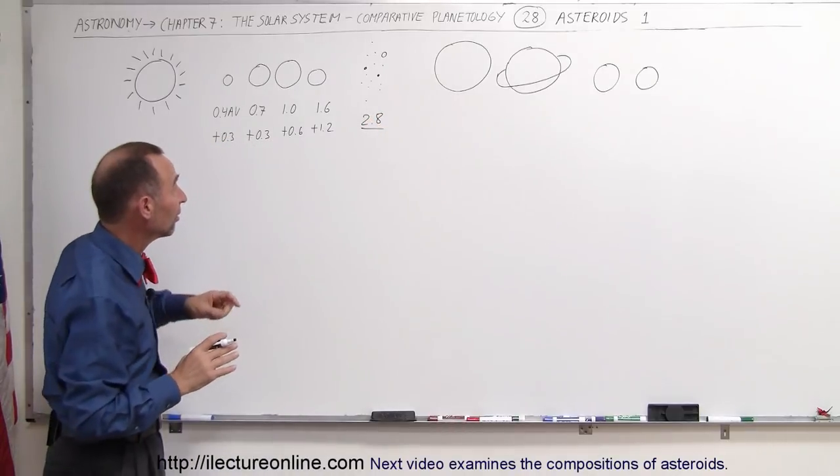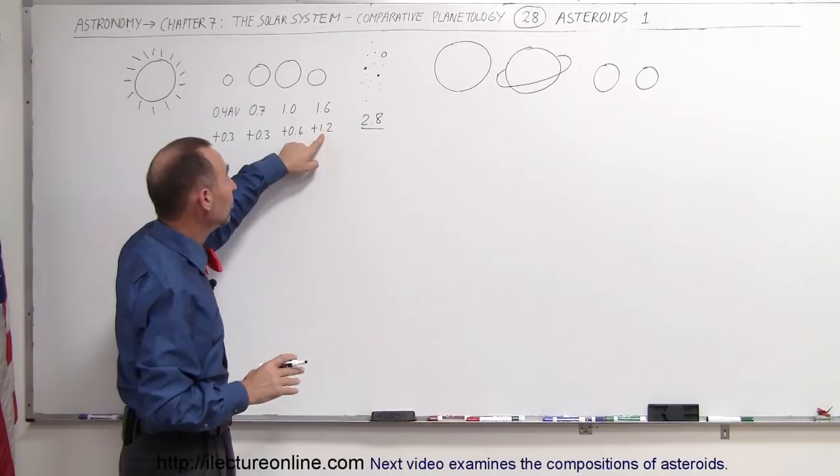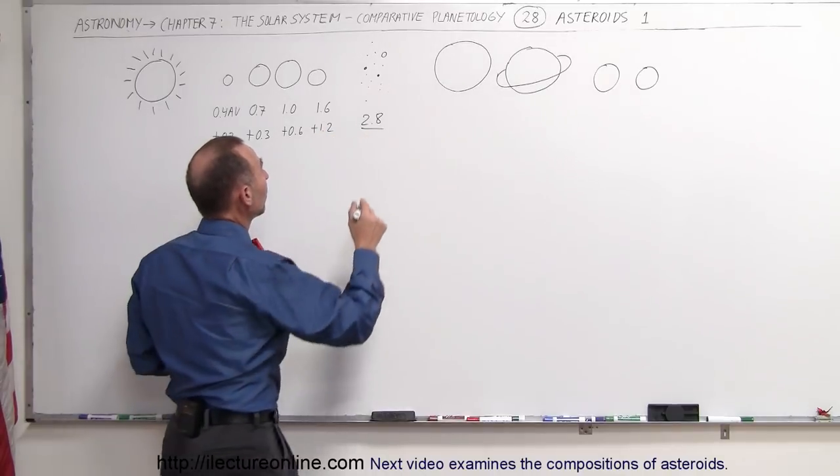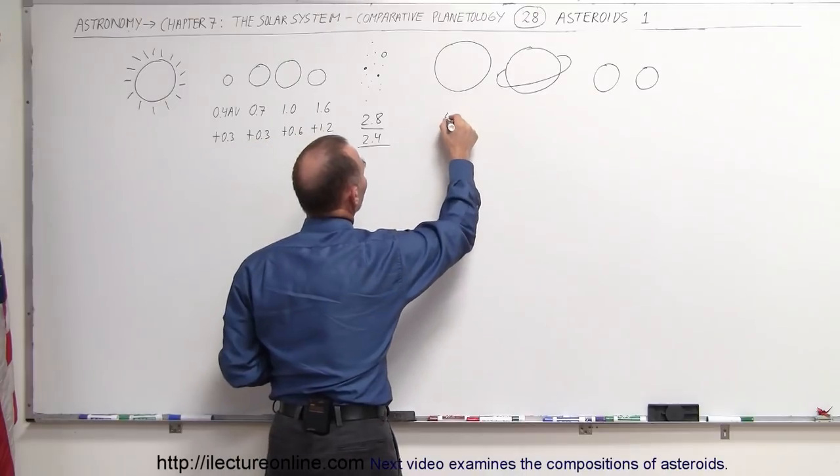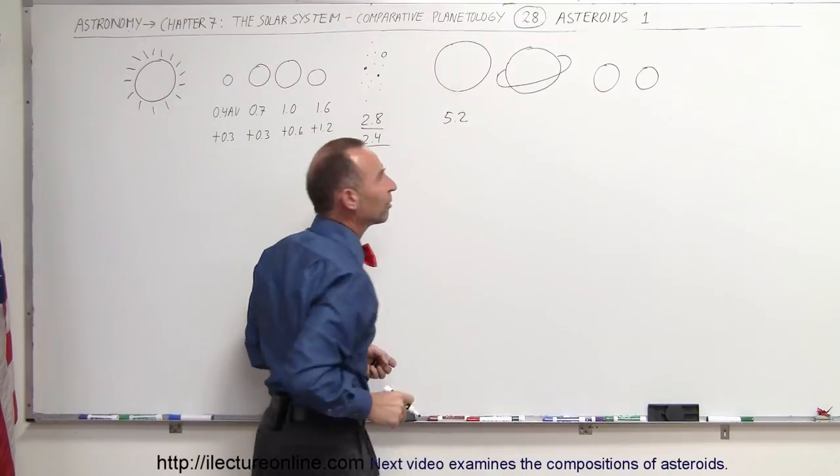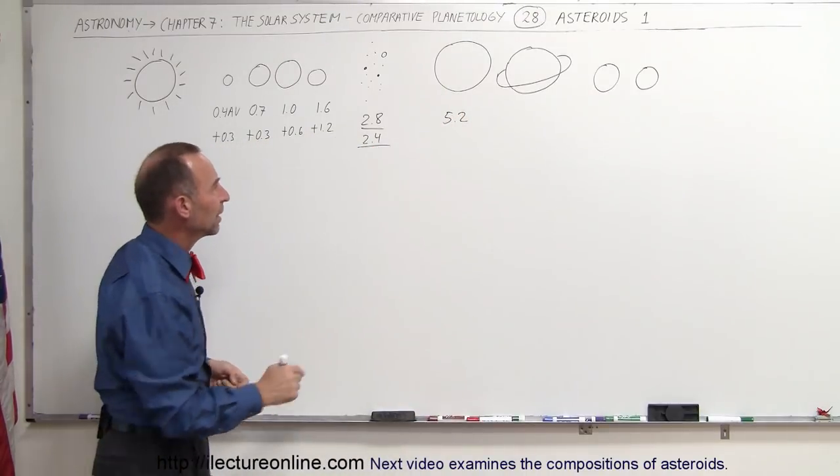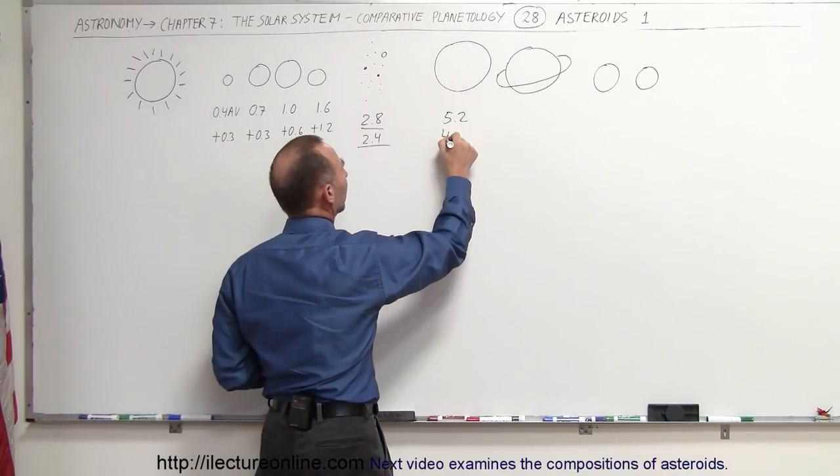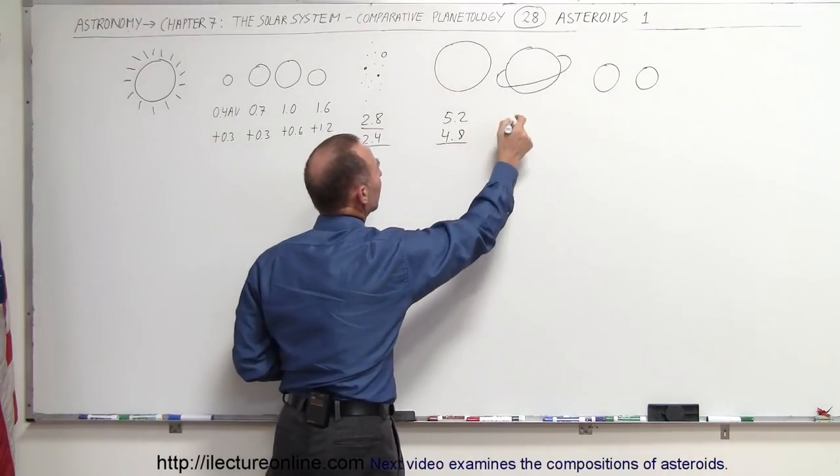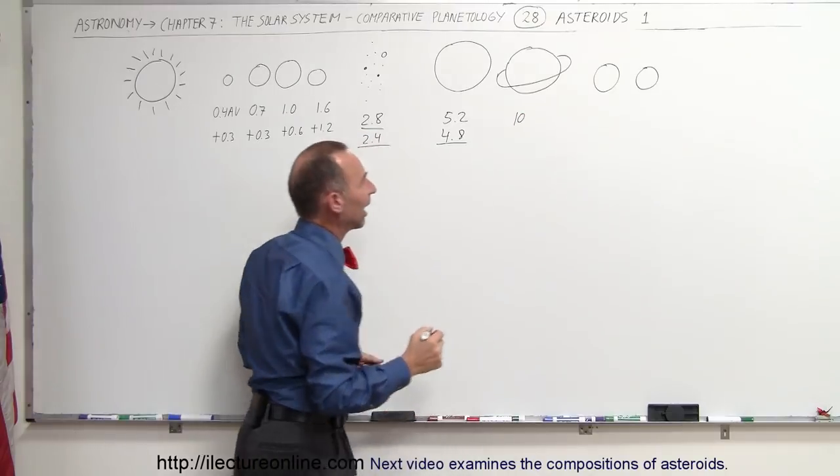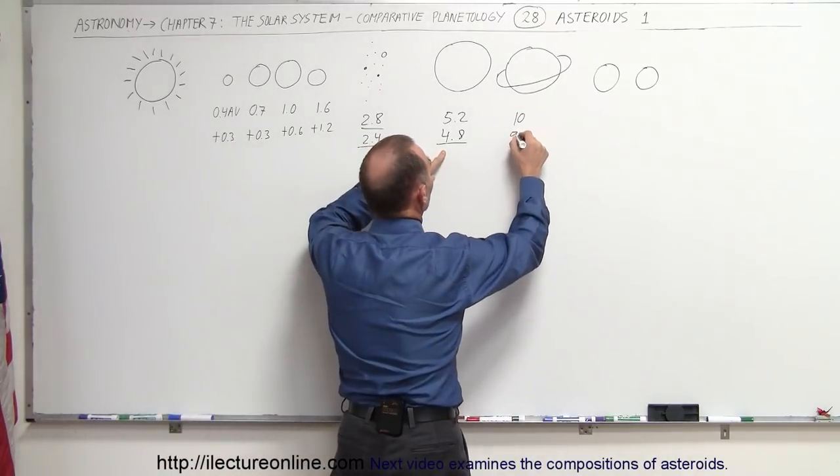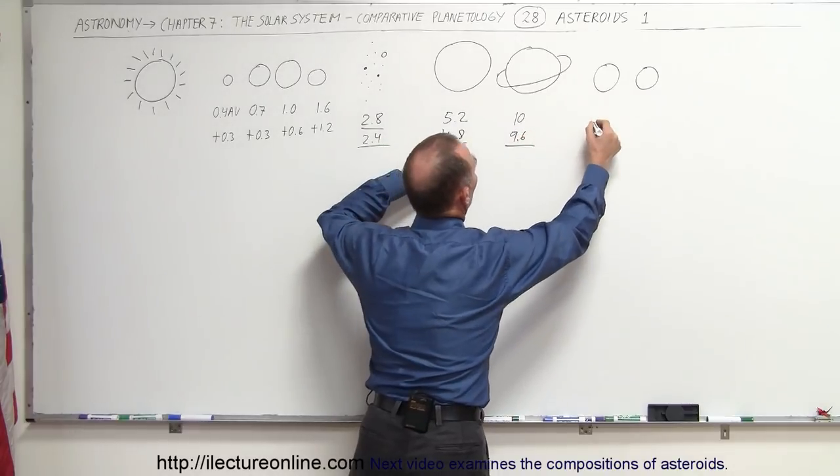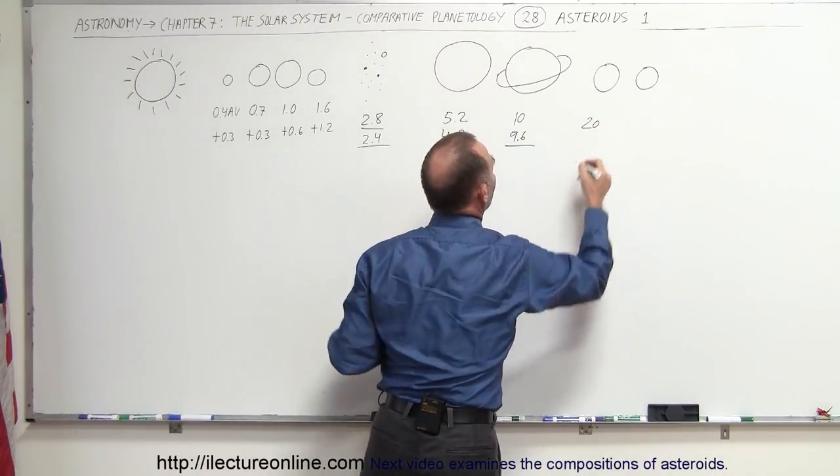Now if we continue this process, if we double this number and add it to 2.8, so that would be plus 2.4, add it together, we get 5.2 which puts us at the orbit of Jupiter. If we now take this number and we double it and make it 4.8 and we add that together, we come to the orbit of Saturn. Now if we double this number right here, that would be 9.6 and we add it together, we get to the orbit of Uranus.